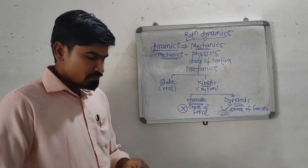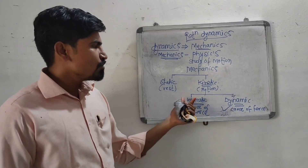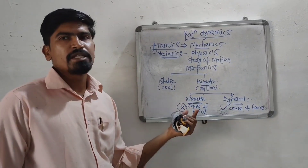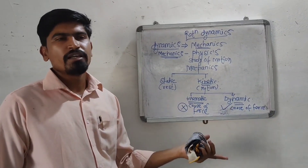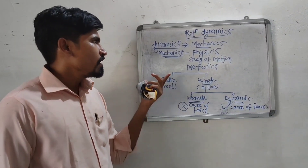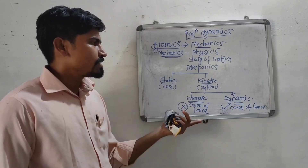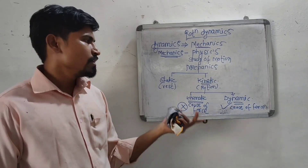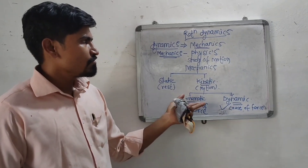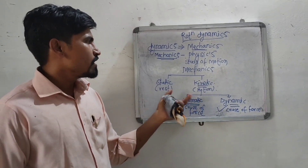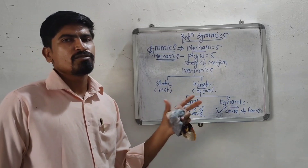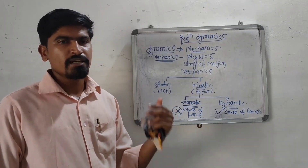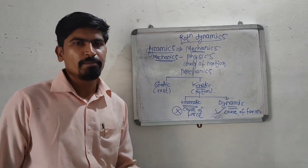There are some basic concepts we need to cover: rigid body, center of mass, and axis of rotation. We are going to study the basic definitions of rigid body, axis of rotation, and center of mass.